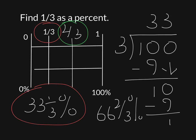You know what, let's box that off. 66 and two-thirds percent is what goes with two-thirds up there, and one-third goes with 33 and a third percent. And there's some examples of how to find fractions as percents using a double number line diagram. Thank you.